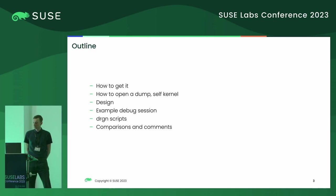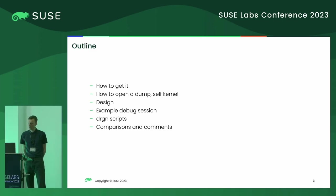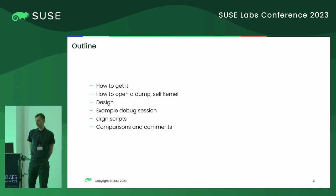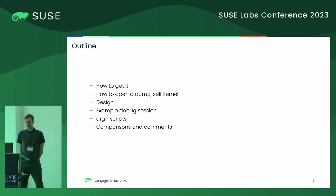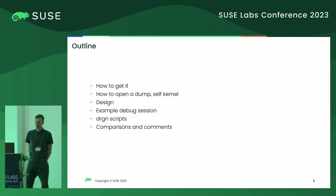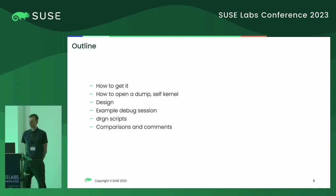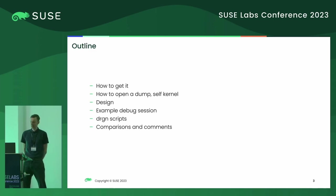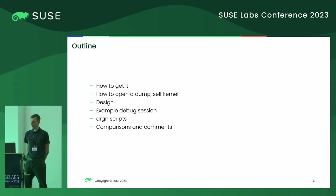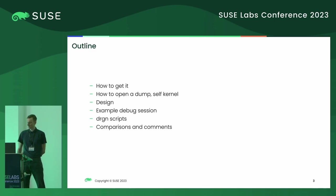So in this talk I will go through some points: how to get the program, how to set up a core dump to open it, a little overview of the design of the program. Then I would compare it on some reference debug session, mention Dragon scripts, and at the end there will be some comments of mine about it.